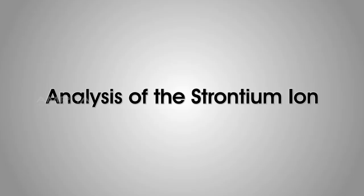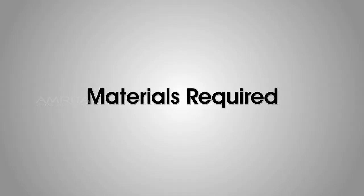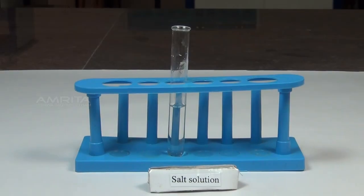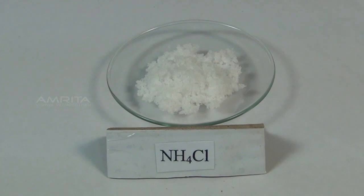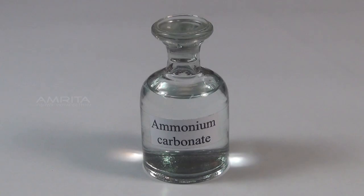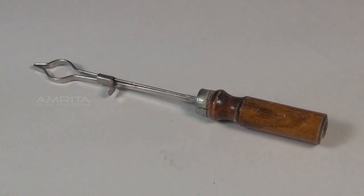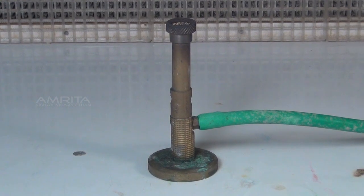We look at the analysis of the strontium ion. Materials required: salt solution in a test tube, ammonium chloride, ammonium hydroxide, ammonium carbonate solution, droppers, spatula, test tube holder and Bunsen burner.